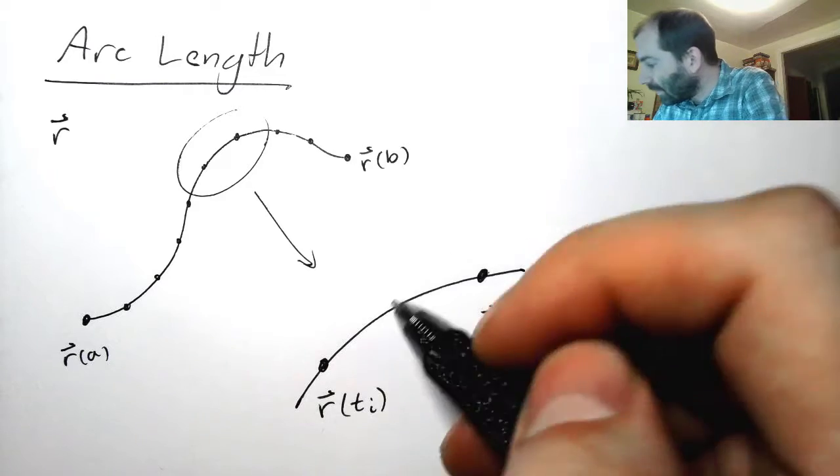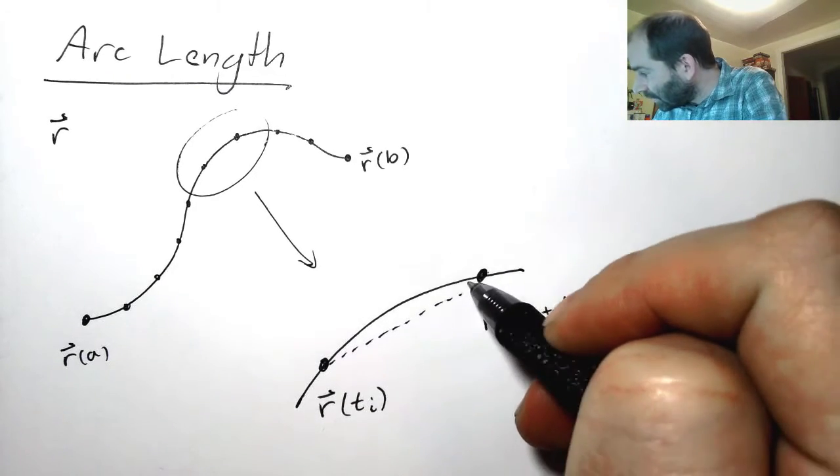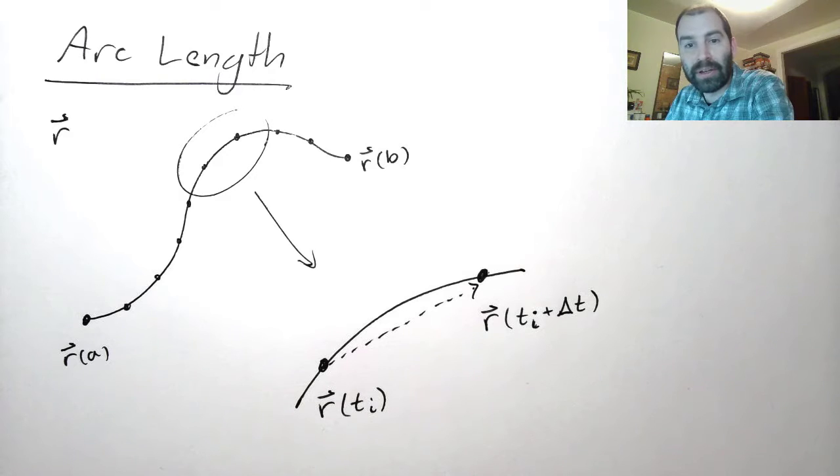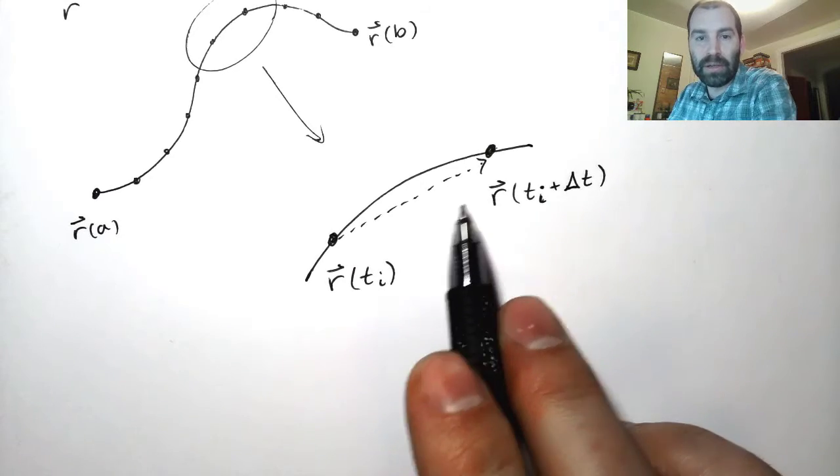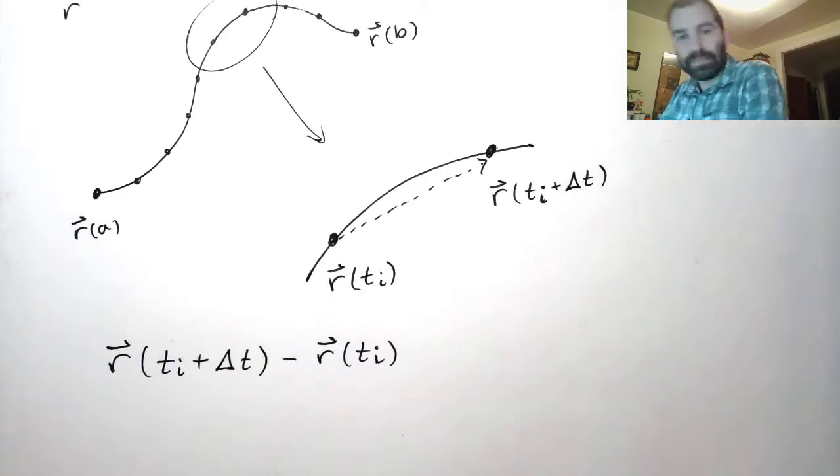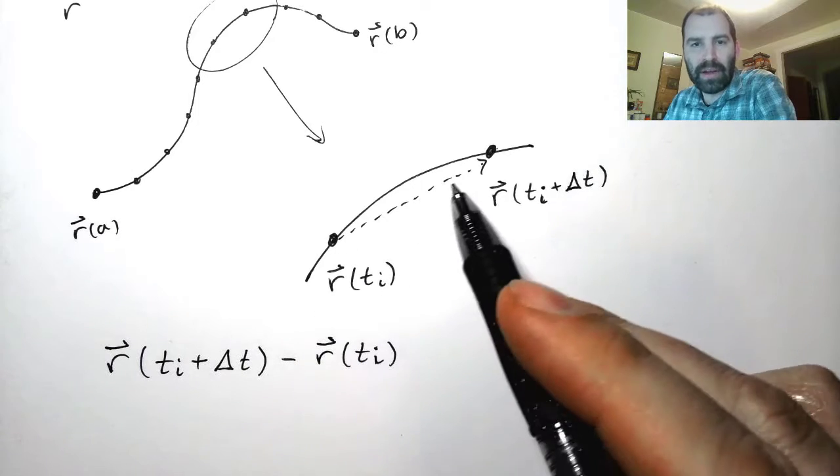Now I can get this distance. This is just a vector going from here to here. How do I write that vector down? Well that vector is just the difference between these two vectors. That would give me this straight line distance.